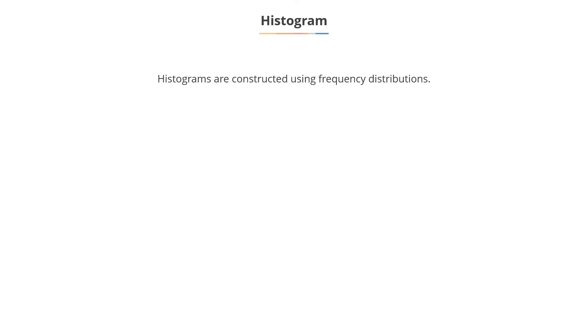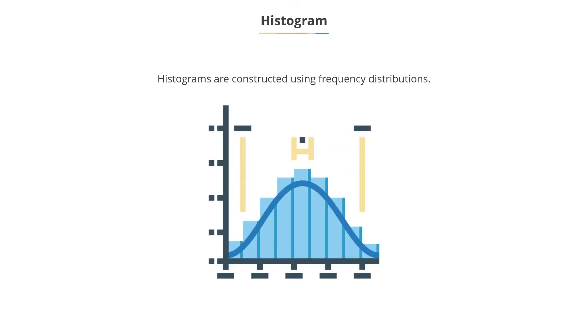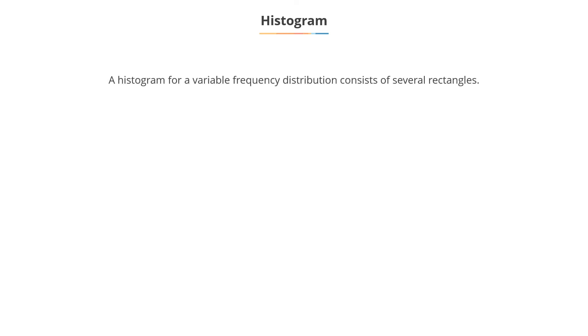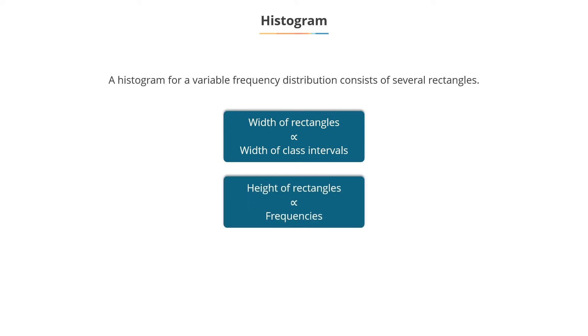Histograms are constructed using frequency distributions. A histogram for a variable frequency distribution consists of several rectangles, whose widths are proportional to the width of the class intervals and heights are proportional to the frequencies.